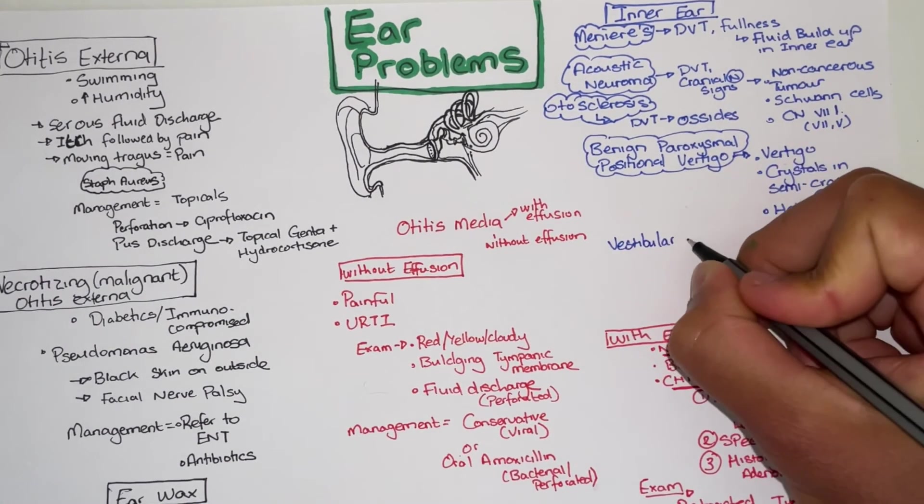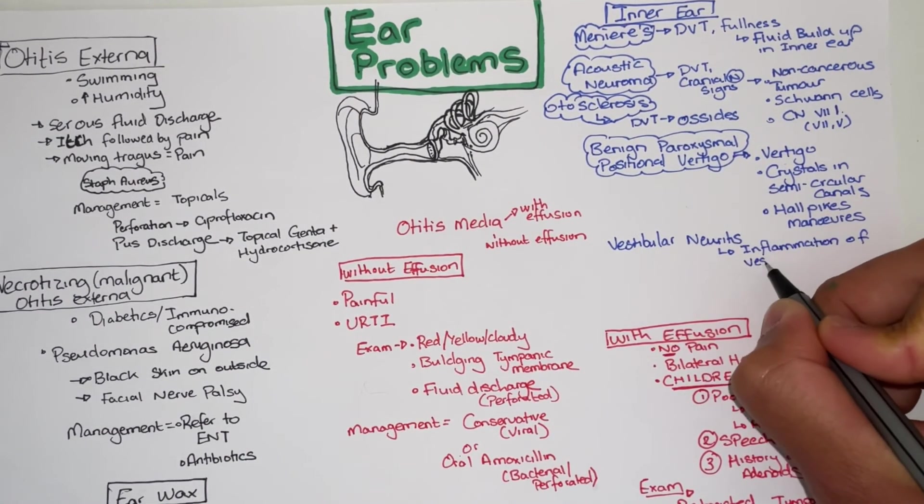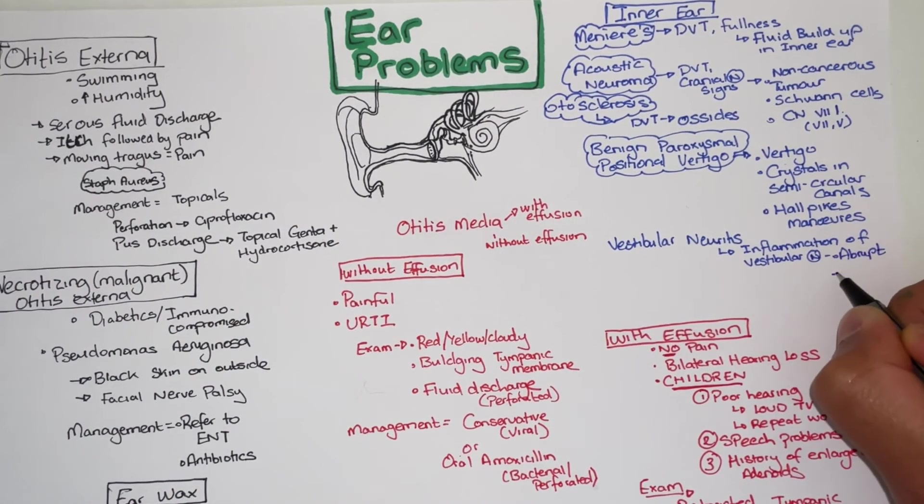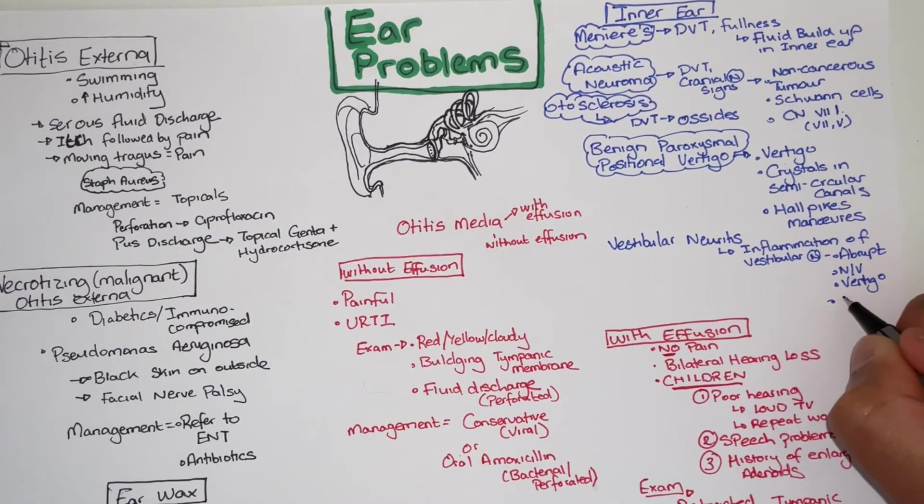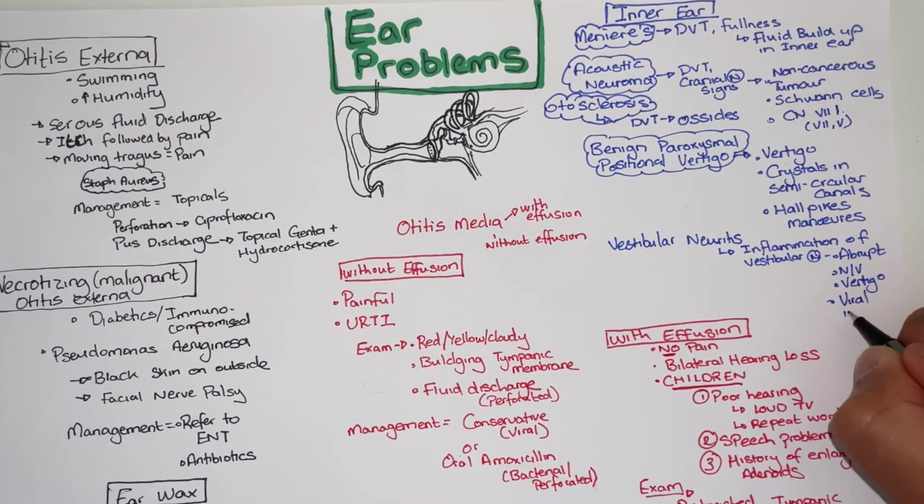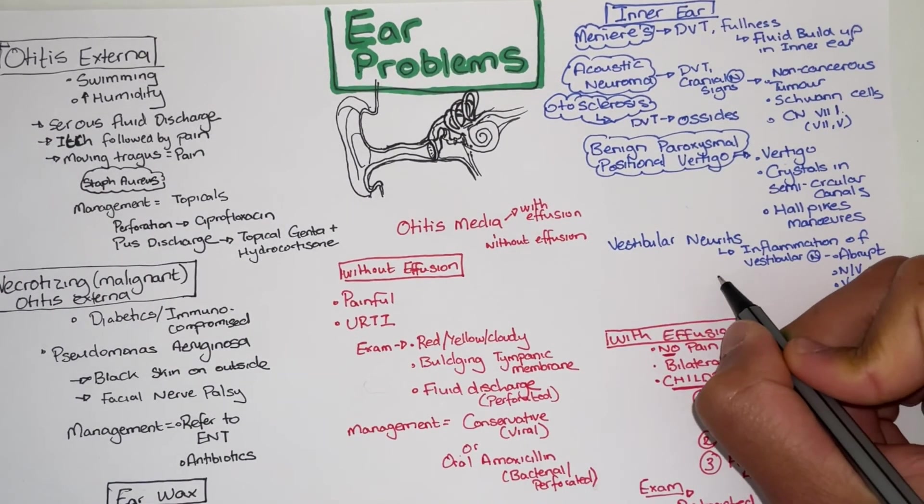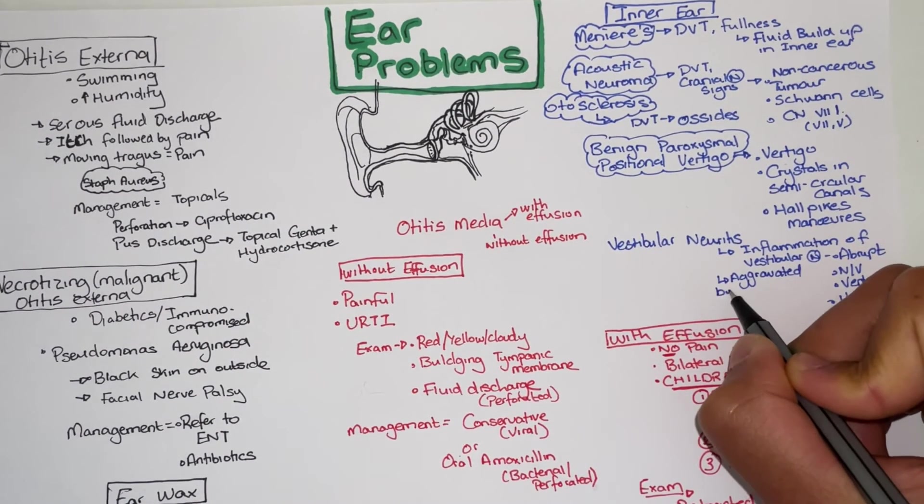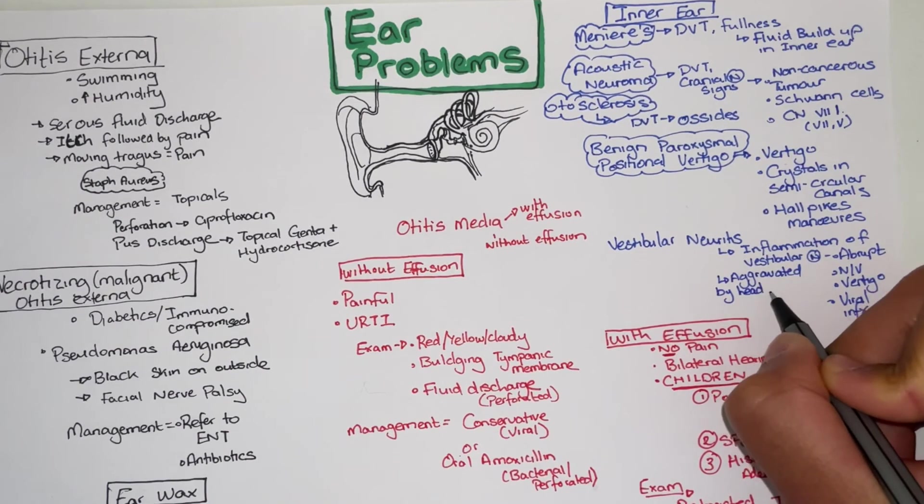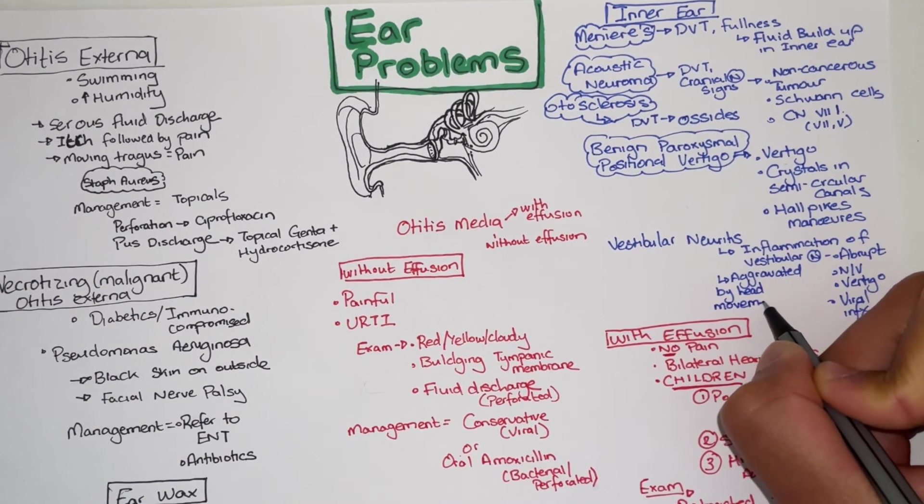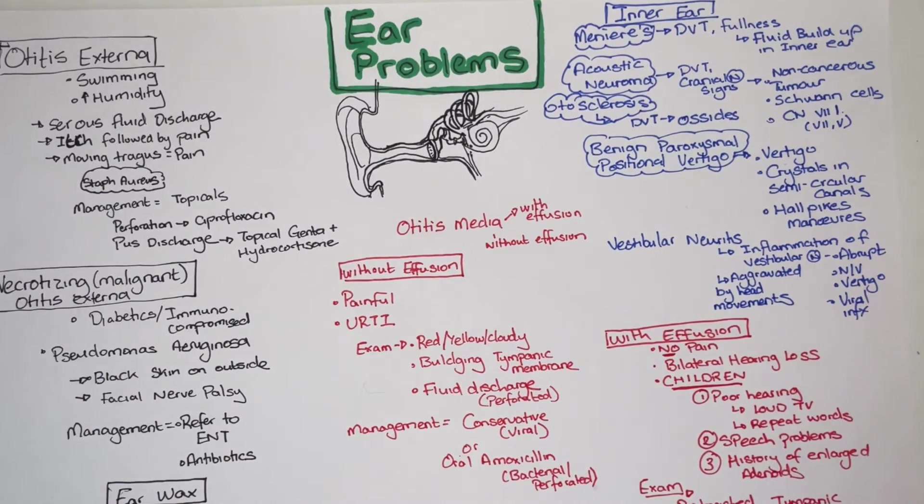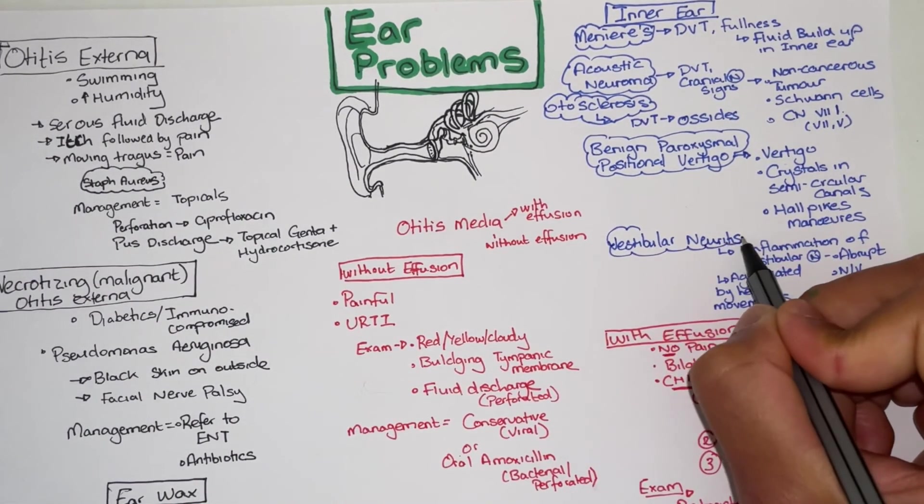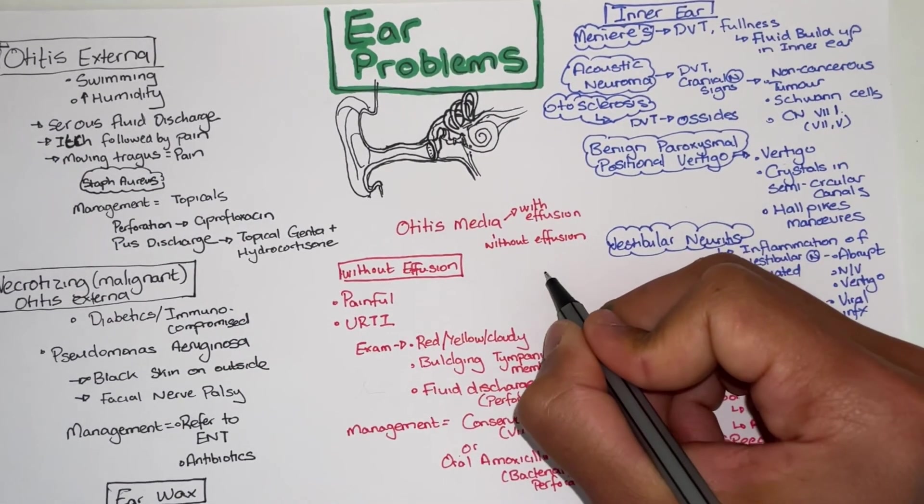Vestibular neuritis is the inflammation of the vestibular nerve. It has an abrupt onset of nausea and vomiting and is usually after a viral infection. It is important to know that the vertigo is present at rest and is aggravated by head movements in vestibular neuritis. So patients will tell you the room feels like it is spinning all the time and is worse when their heads move. This is different to BPPV where patients will only experience the sensation of spinning when their heads move.